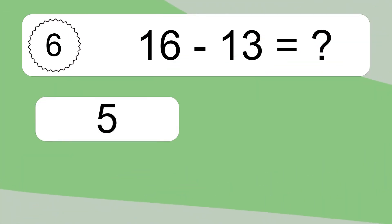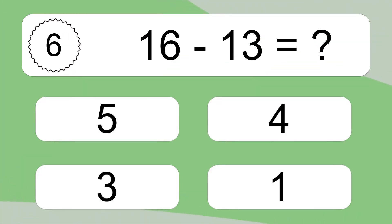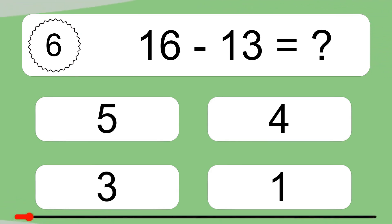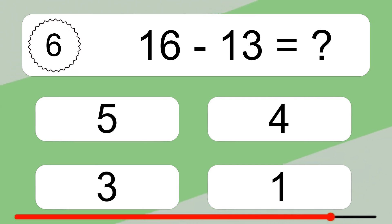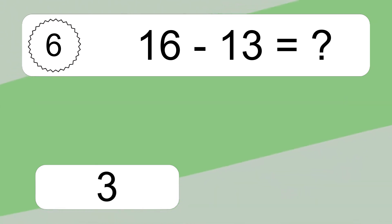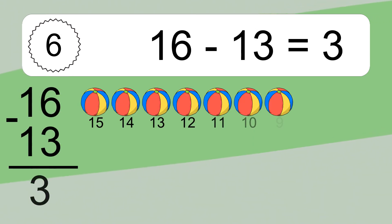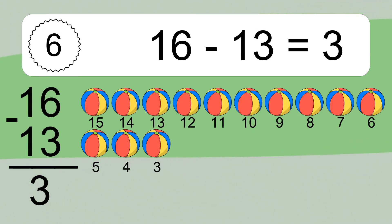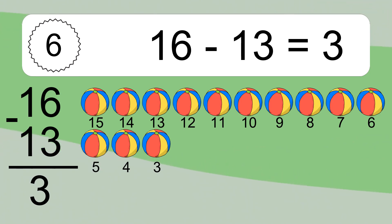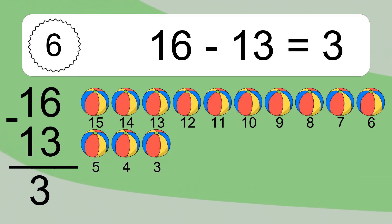16 minus 13 equals what? 16 minus 13 equals 3. Let's count it: 15, 14, 13, 12, 11, 10, 9, 8, 7, 6, 5, 4, 3.